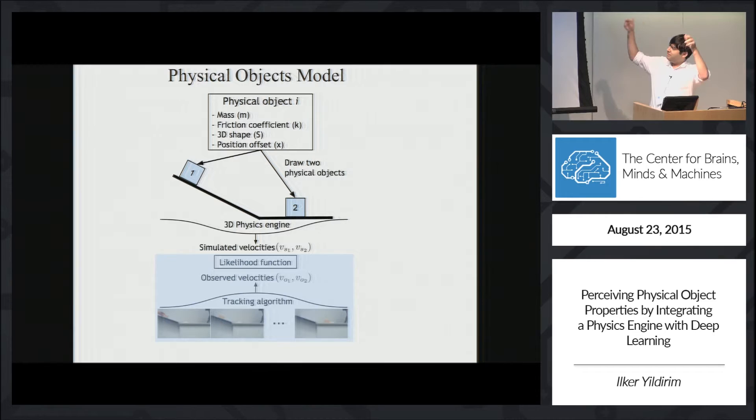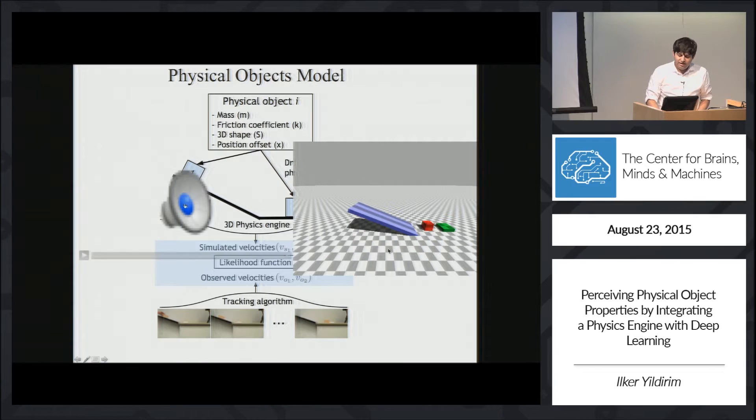And then we take the input videos and sort of lift them to velocity space by passing them to a tracking algorithm. So then inference in the model is just trying to search in the space of these physical objects to match simulated velocity profiles to observed velocity profiles.